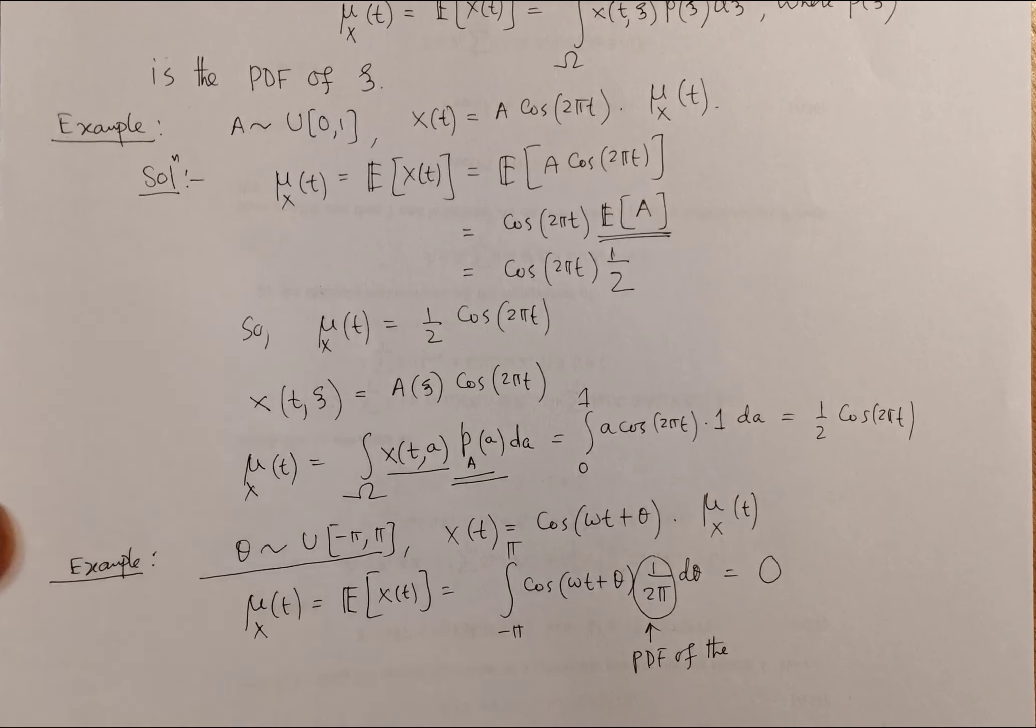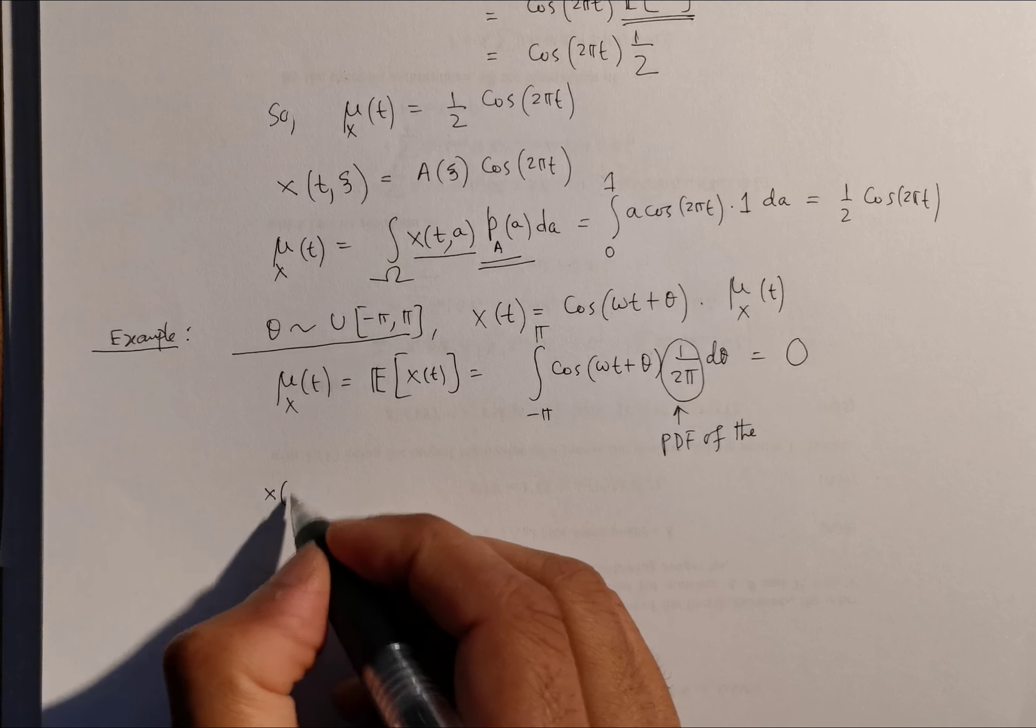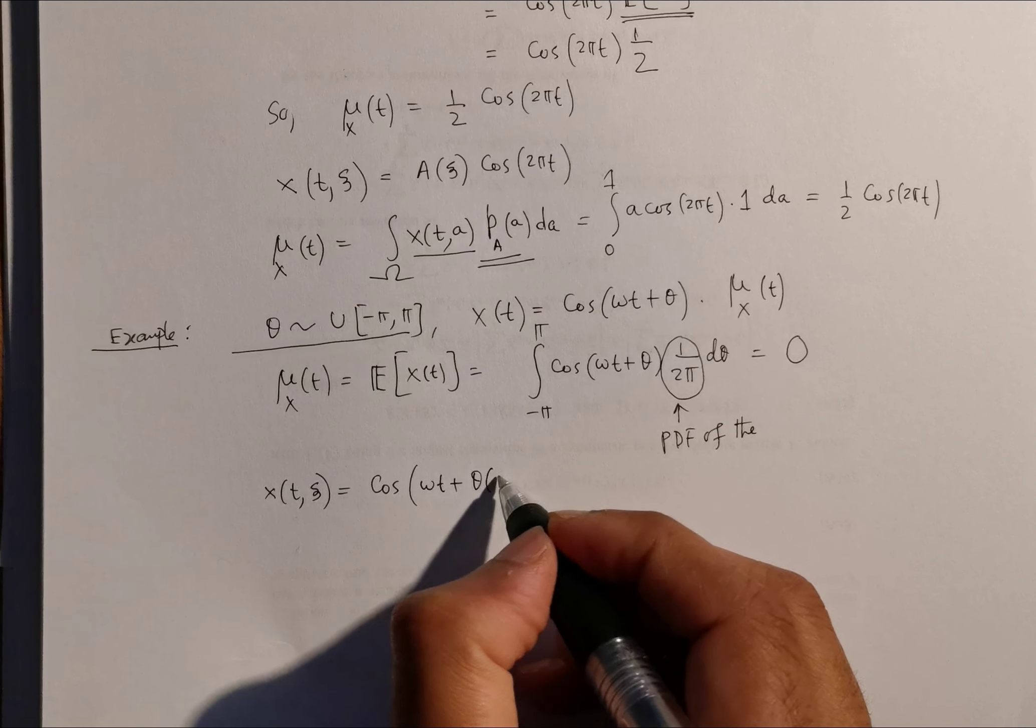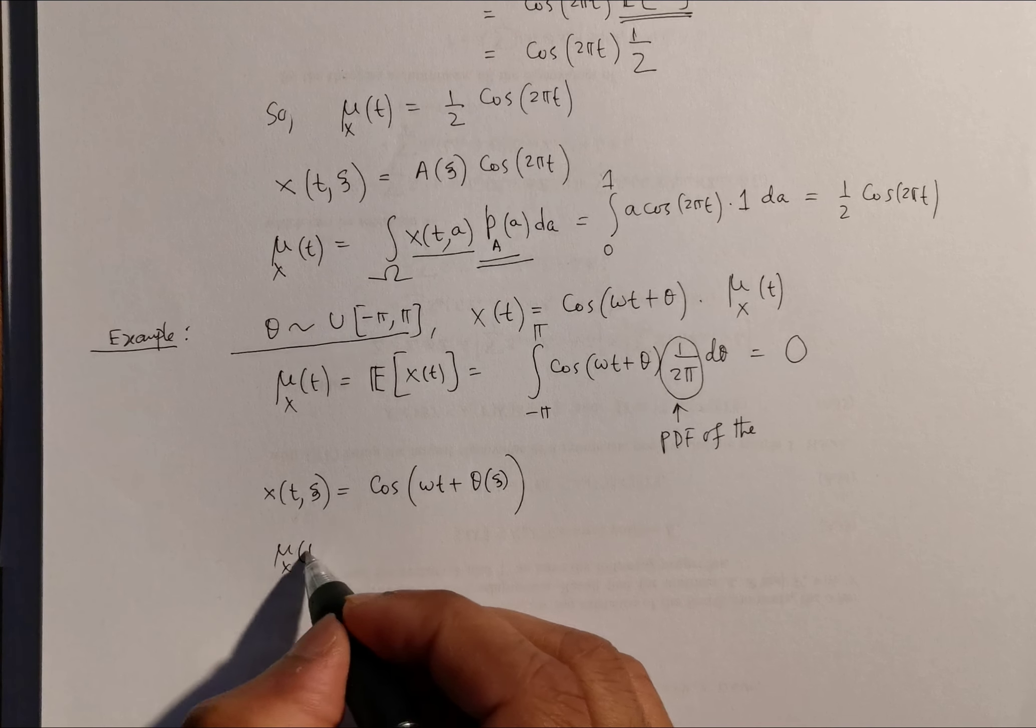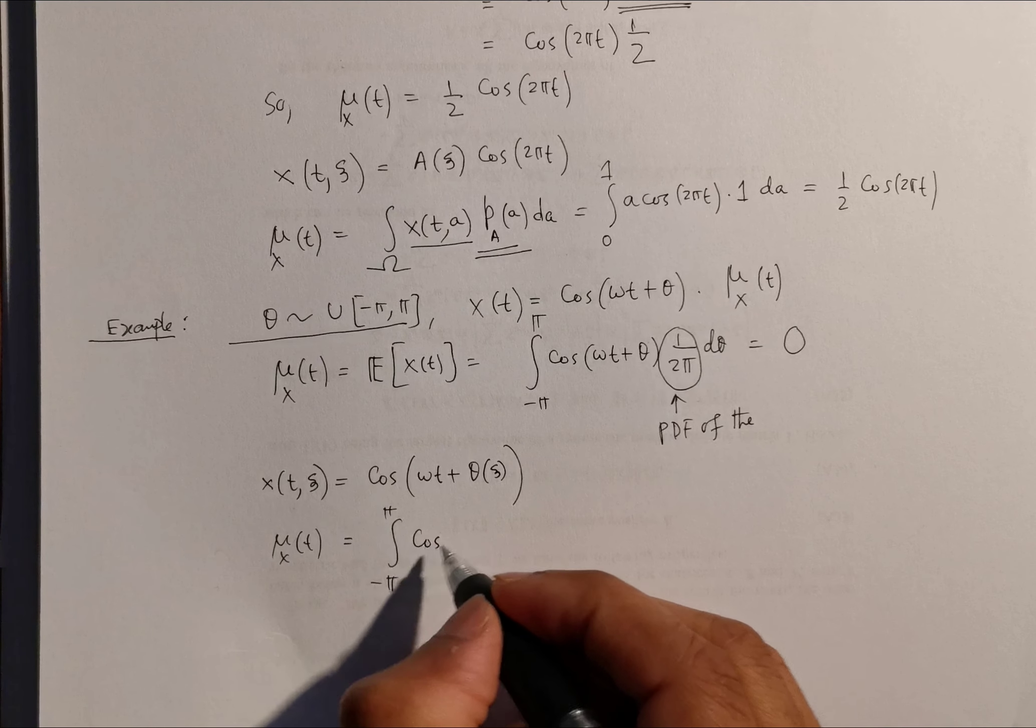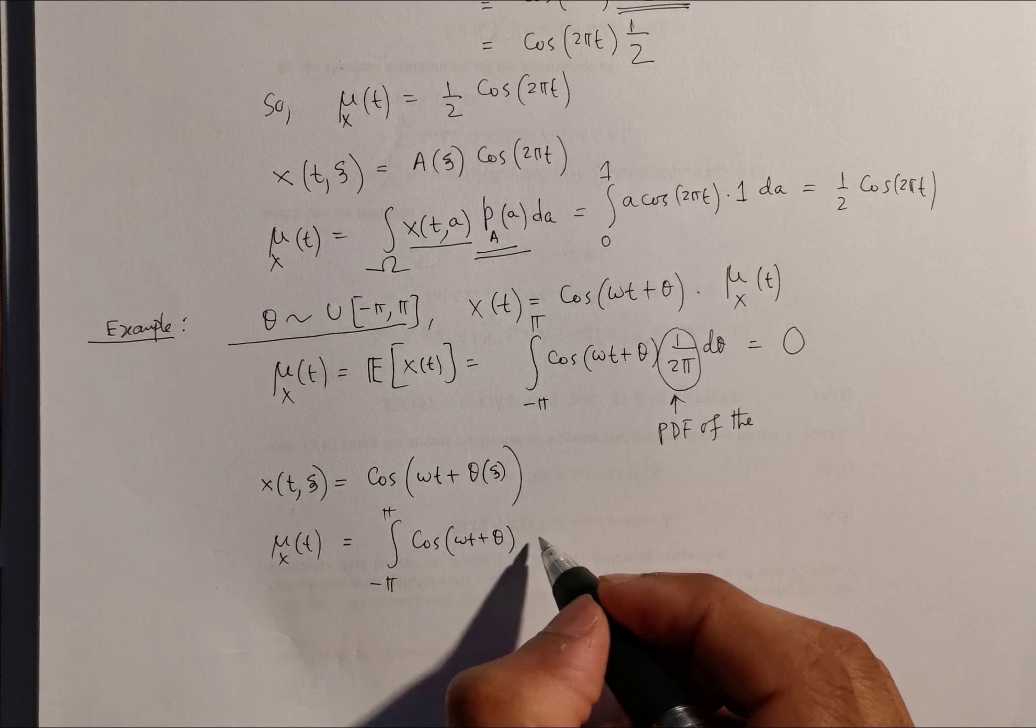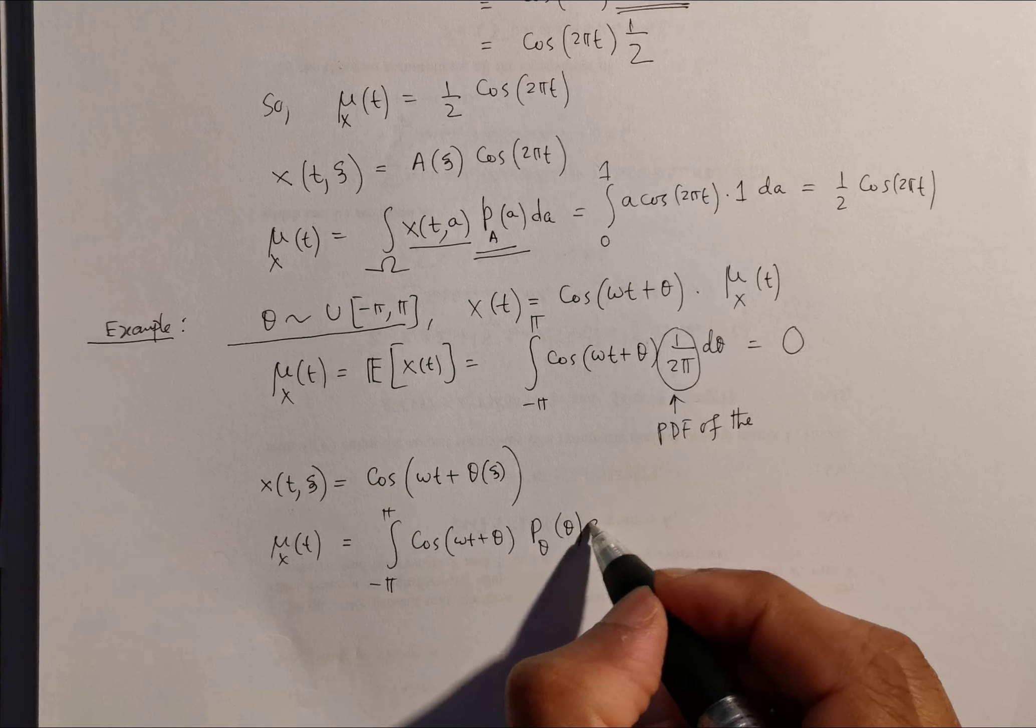So in other words, more explicitly, x(t,ξ) is equal to cos(ωt + θ(ξ)). In terms of the mean function, μ_x(t) is the integration from -π to π of cos(ωt + θ) times p(θ), the probability density of θ, dθ.